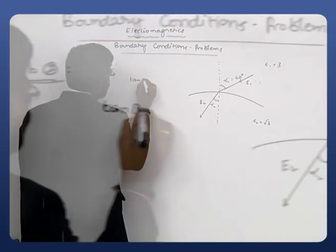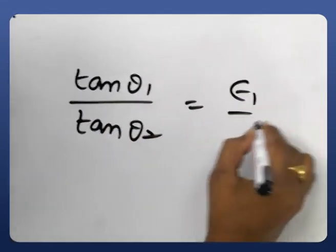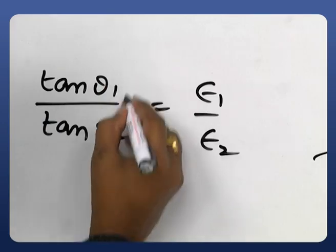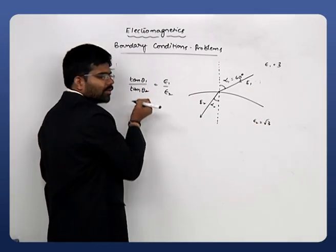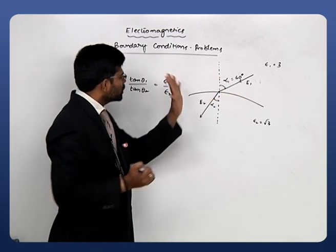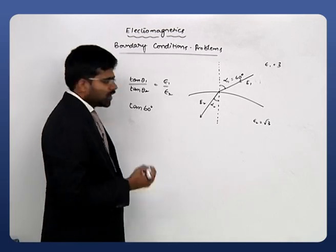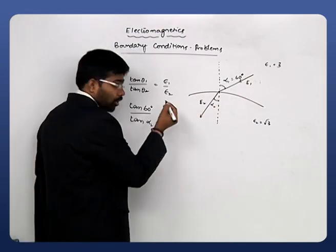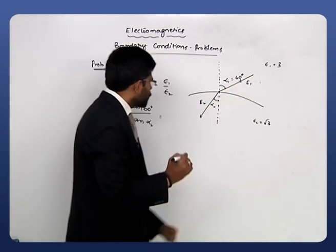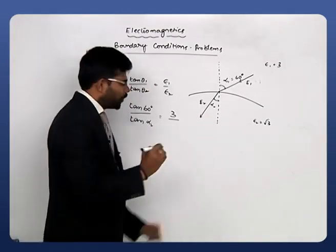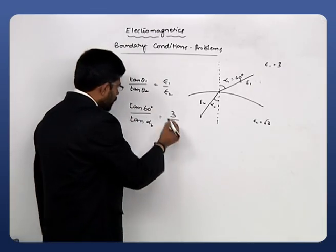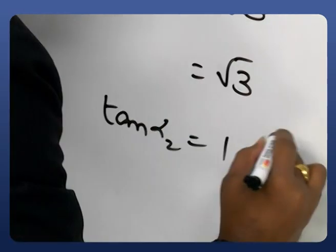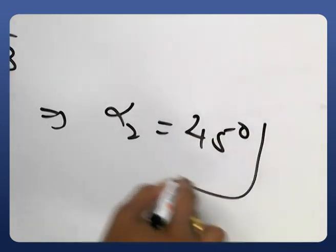The law of refraction for electric fields at the boundary is: tan θ₁ / tan θ₂ = ε₁ / ε₂. Substituting the values: tan 60° / tan α₂ = 3 / √3 = √3. Since tan 60° = √3, we get √3 / tan α₂ = √3, so the √3 terms cancel and tan α₂ = 1. Therefore α₂ = 45°. This is the answer.